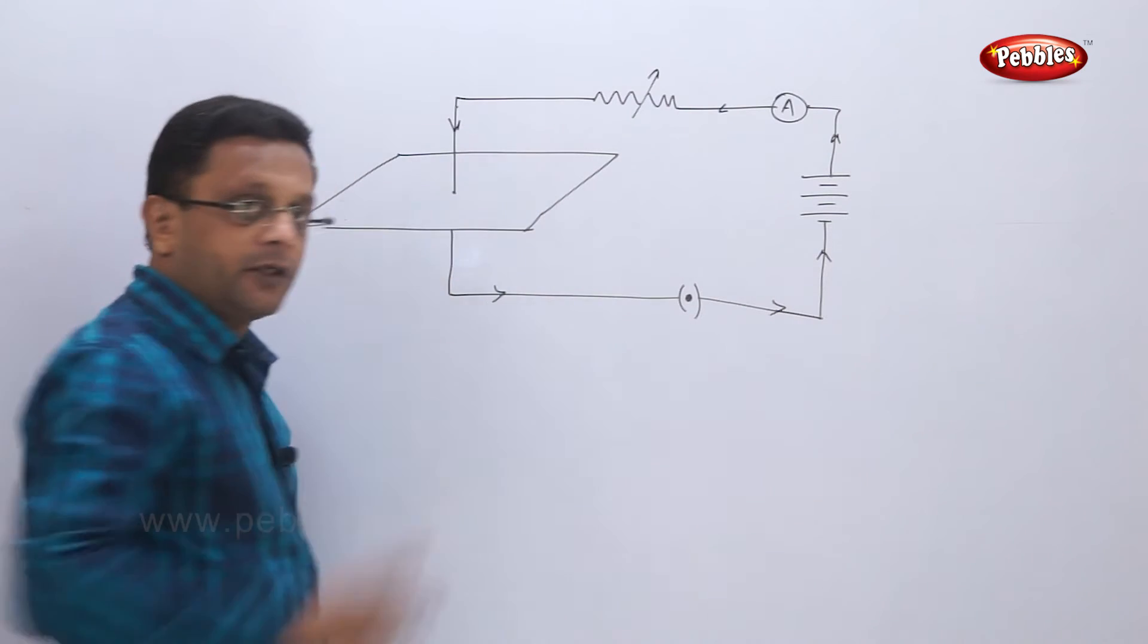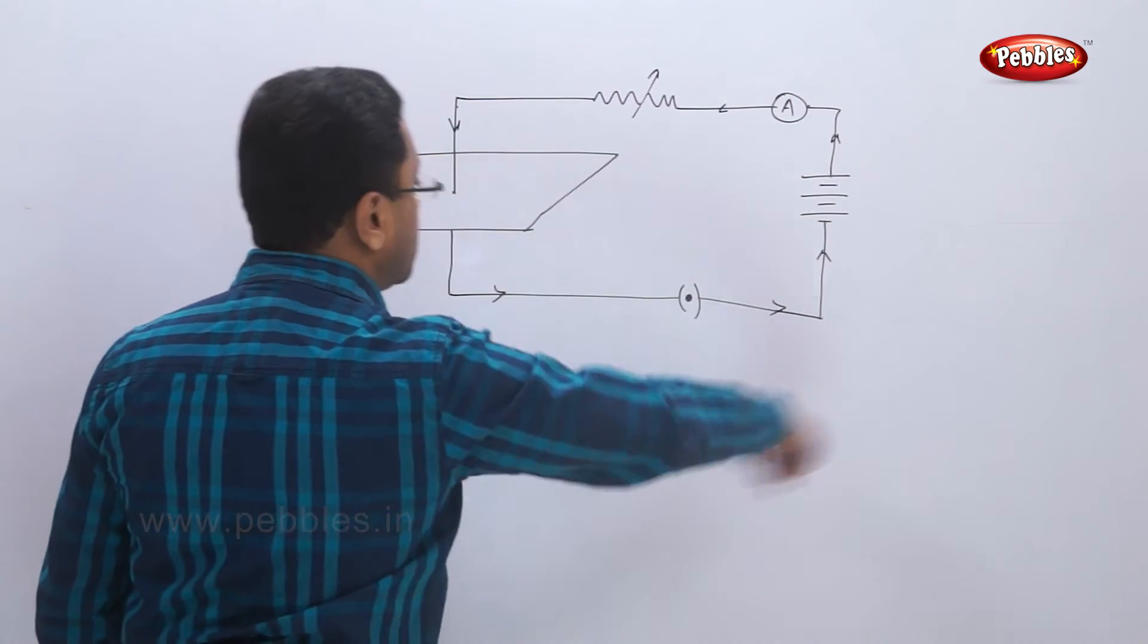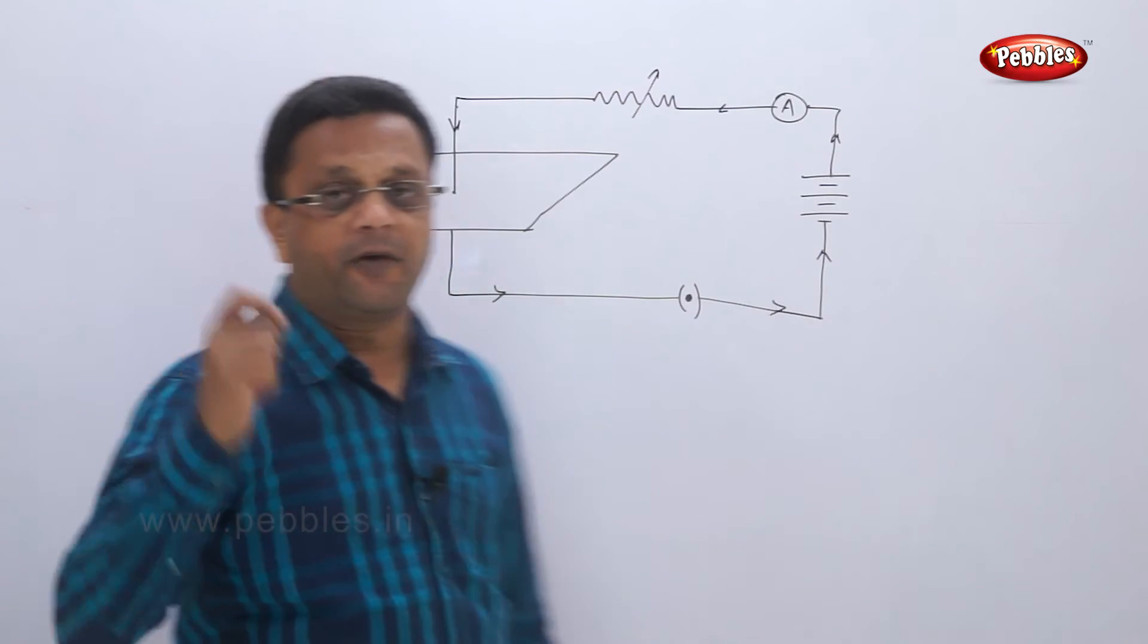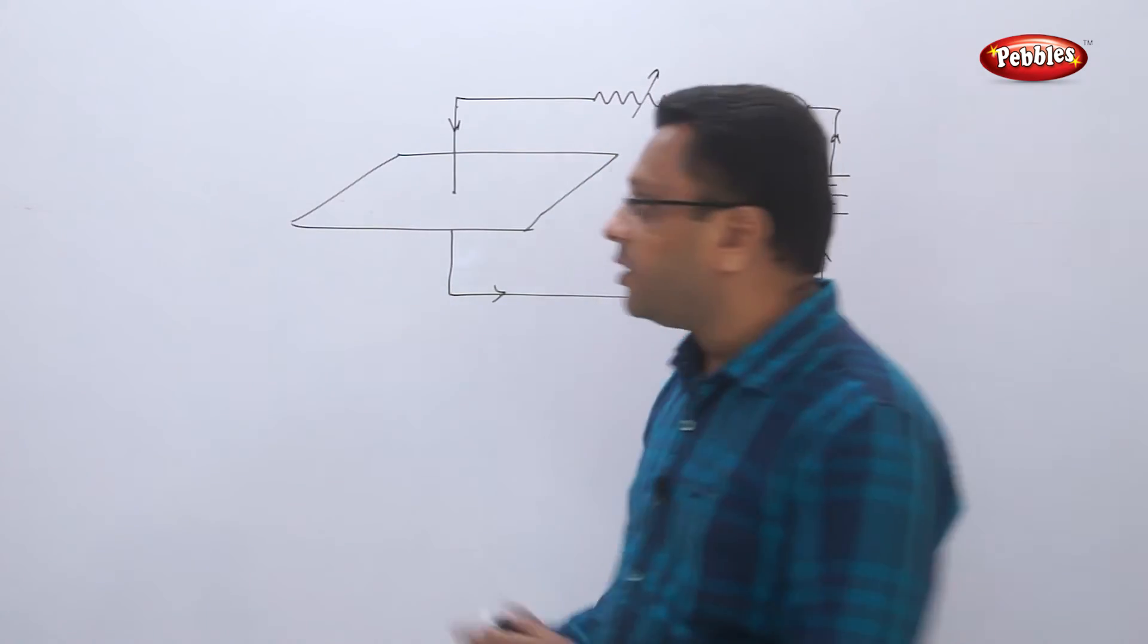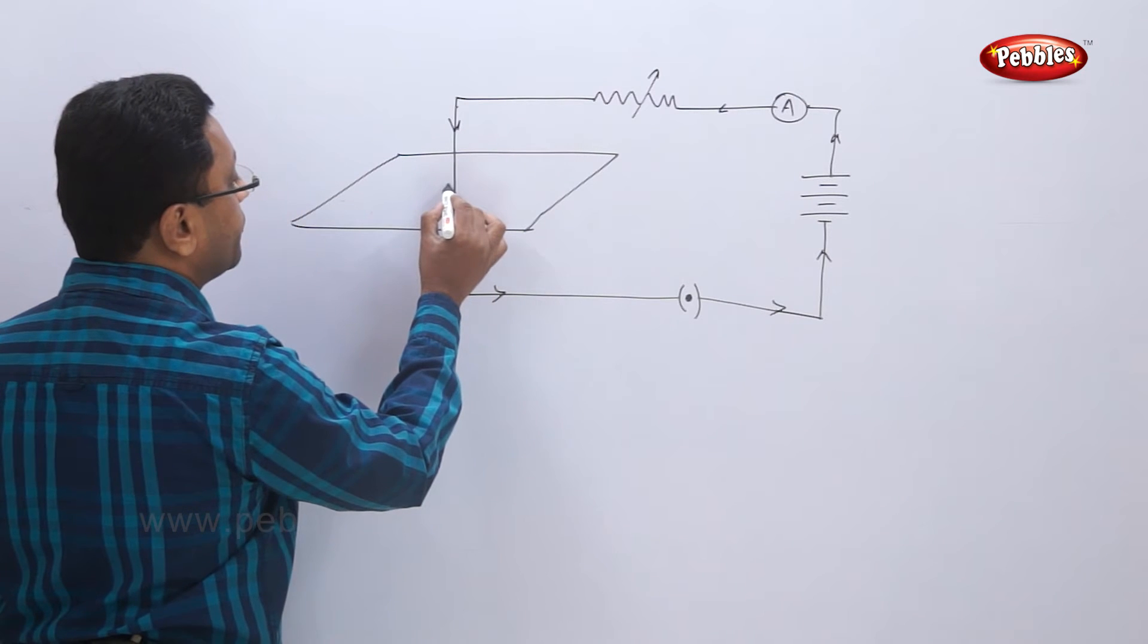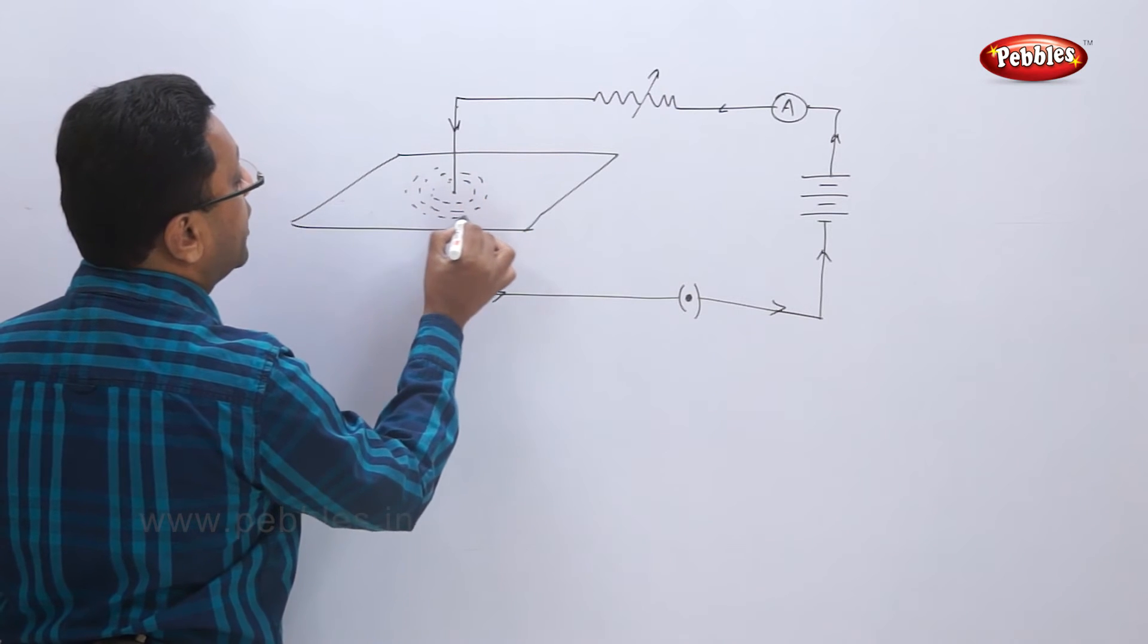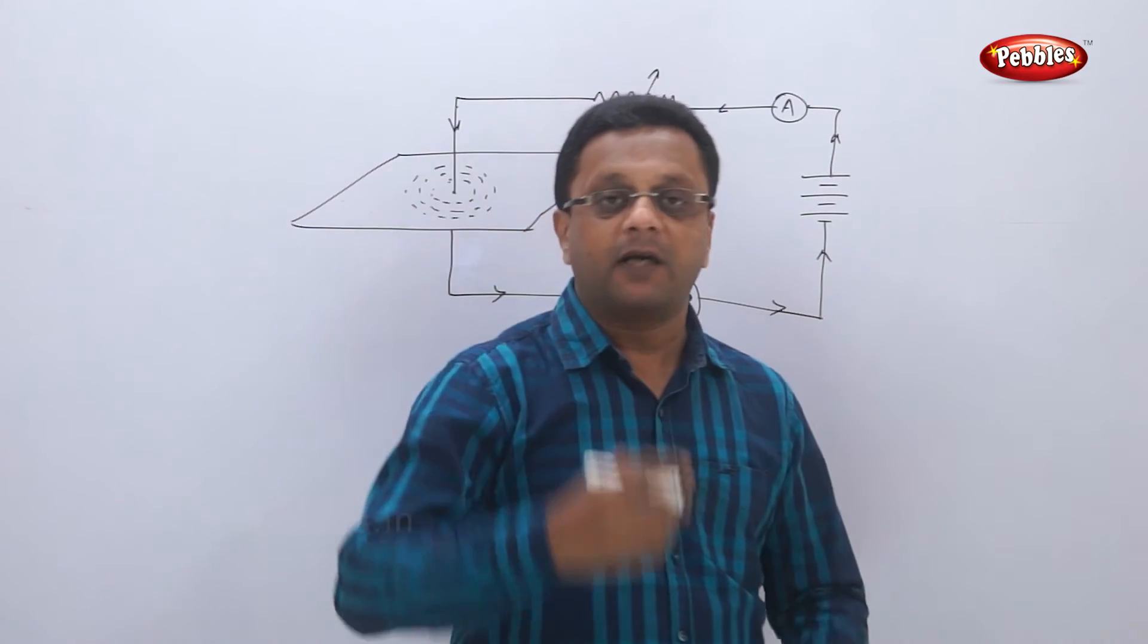Now what happens? He closed the circuit. The current is flowing through the circuit. Now he sprinkled some iron filings over here, fine iron filings, and he tapped the cardboard. Suddenly he saw, whenever the current is flowing through this, there is magnetic field. The iron filings took a particular shape, a particular fixed path.